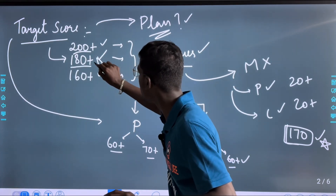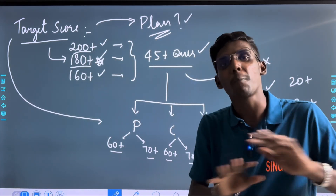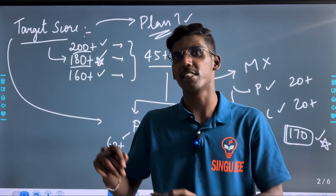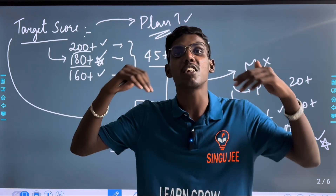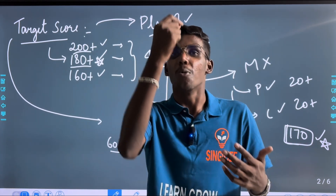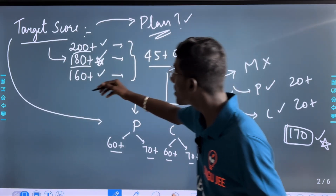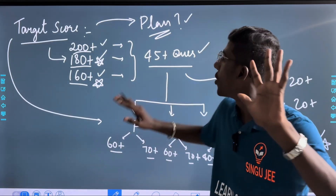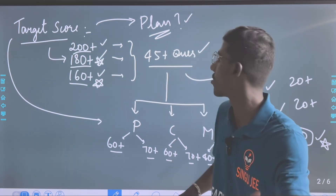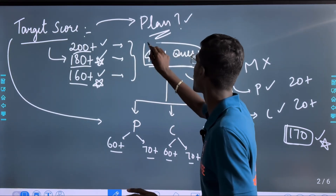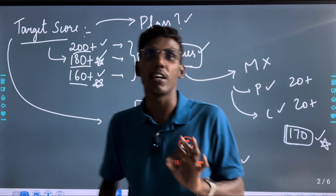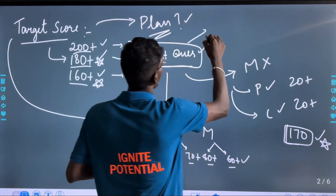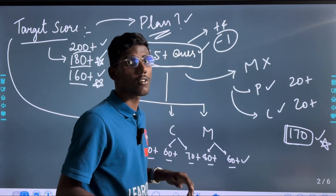For moderate papers, target is 180 plus. The luckiest students will get the toughest paper, and the unluckiest will get the easiest paper. For toughest papers, target is 160 plus. So 180 plus is the target score for 90 percentile. You will be having around 45 questions — 45 questions all correct at plus 4, no negatives: 45 into 4 is 180.